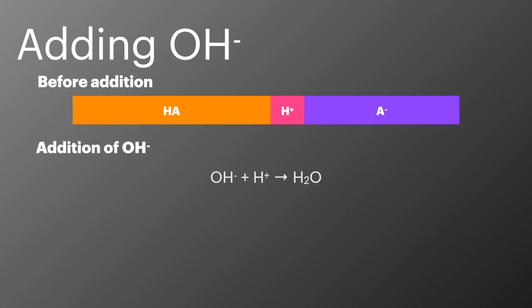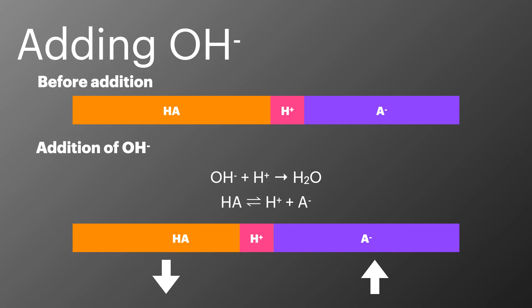When we add our base, it's the hydroxide ions which react with the H+ ions in the buffer. The buffer then shifts to restore the amount of hydrogen ions, causing the amount of HA to decrease while the amount of A- increases. This is opposite to the changes which occur when we add an acid to a buffer.